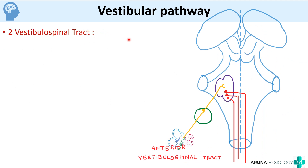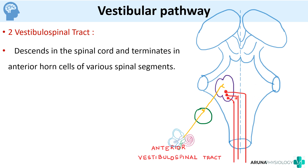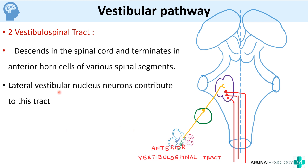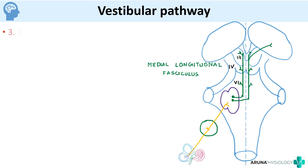The second tract is the vestibulospinal tract, which descends in the spinal cord and terminates in the anterior horn cells at various spinal segments. This includes the anterior vestibulospinal tract and the lateral vestibulospinal tract. These vestibulospinal tracts mainly originate from the lateral vestibular nucleus neurons.